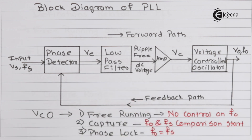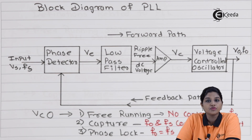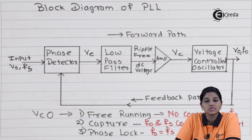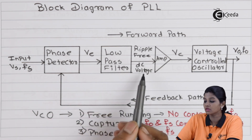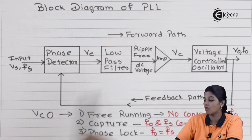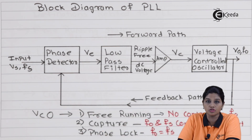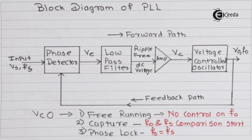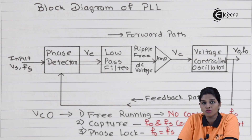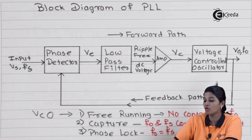The next block is the amplifier. The output provided by the low pass filter does not have enough amplitude to drive the further system. So the amplifier is used to boost the signal and provide adequate amplitude to the DC voltage output of the filter. The output of the amplifier is called VC, that is the control voltage — a ripple-free DC voltage with adequate amplitude to drive the next stage.